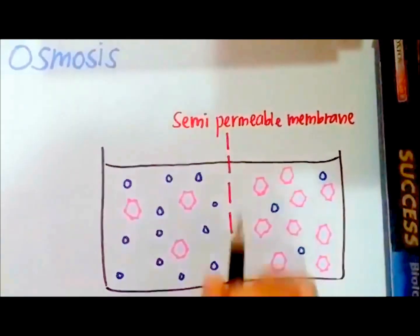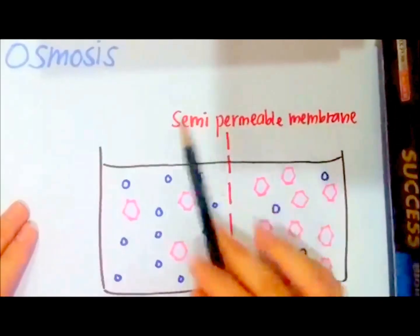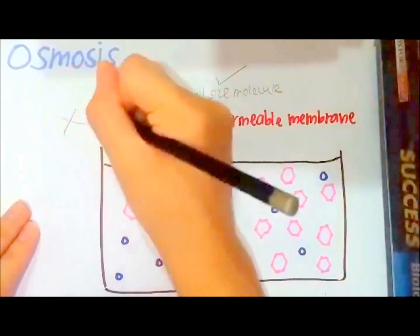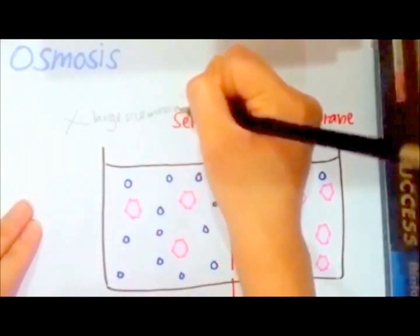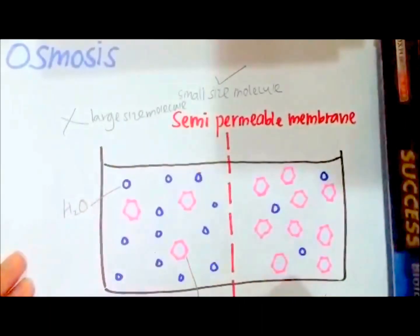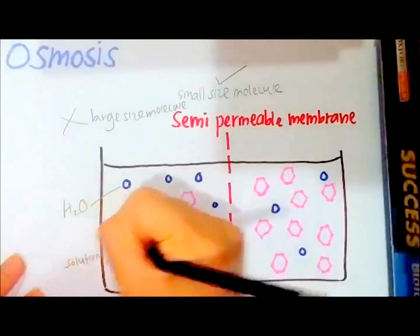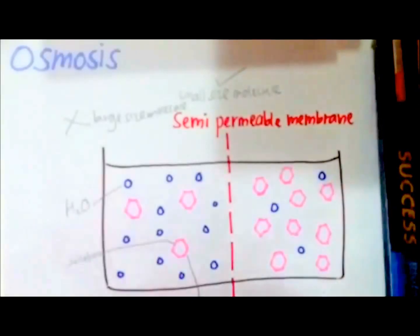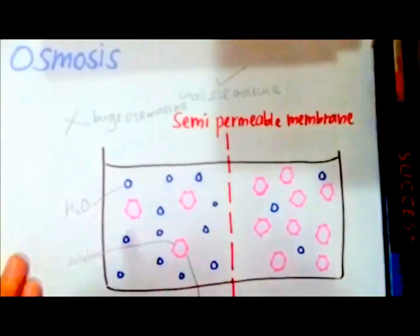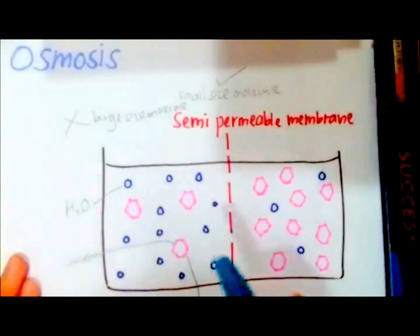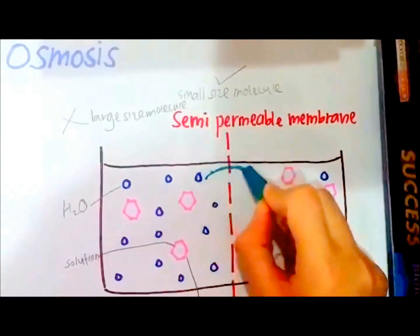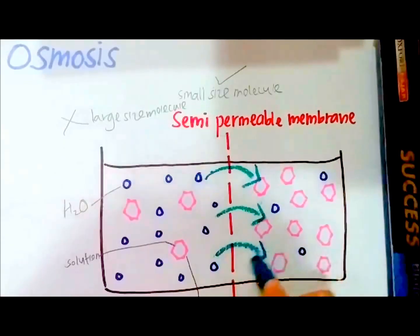Now let's learn about osmosis. A semi-permeable membrane is a membrane that allows small size molecules to pass through but prevents large size molecules from passing through. In this diagram, the blue color represents H2O while the other color represents solution. Since the semi-permeable membrane allows only small molecules through, only H2O can pass. Osmosis means movement of water molecules from a region of high concentration to a region of low concentration.